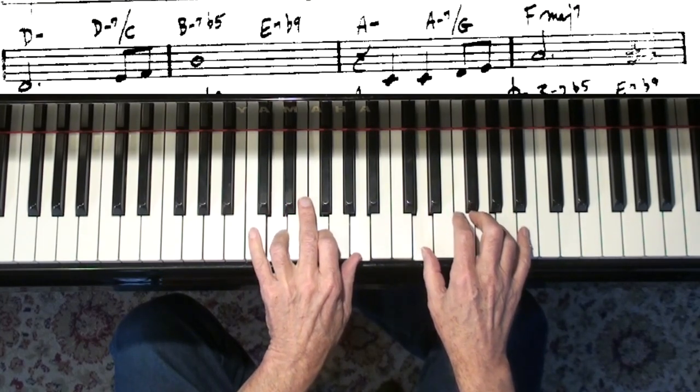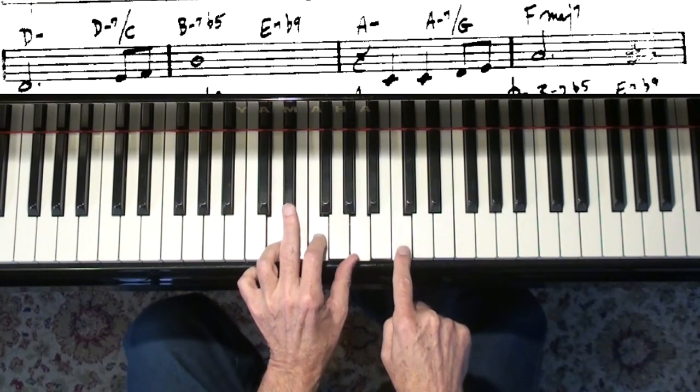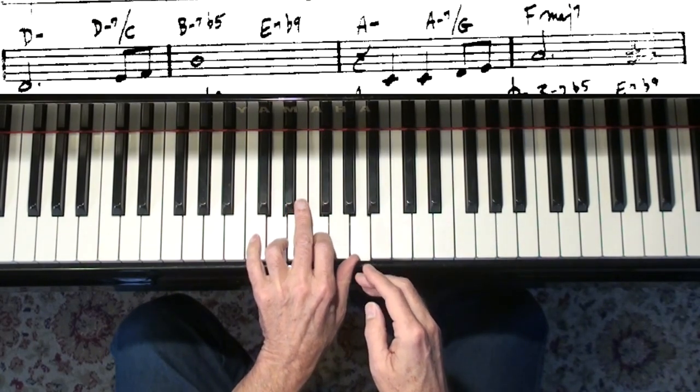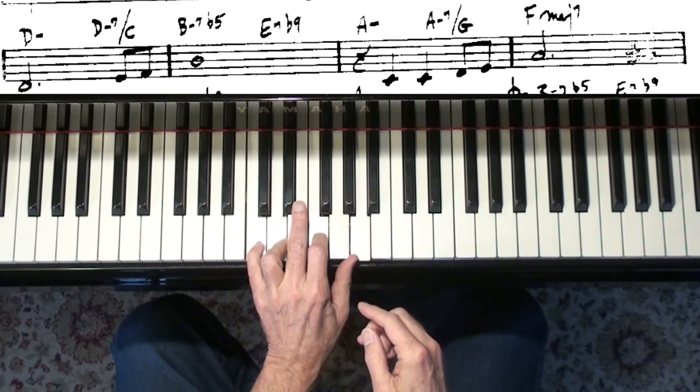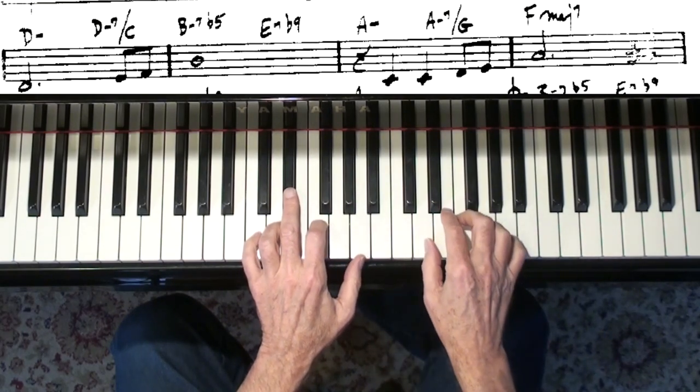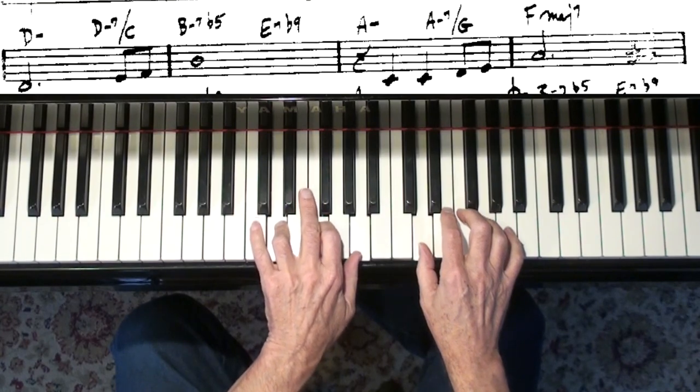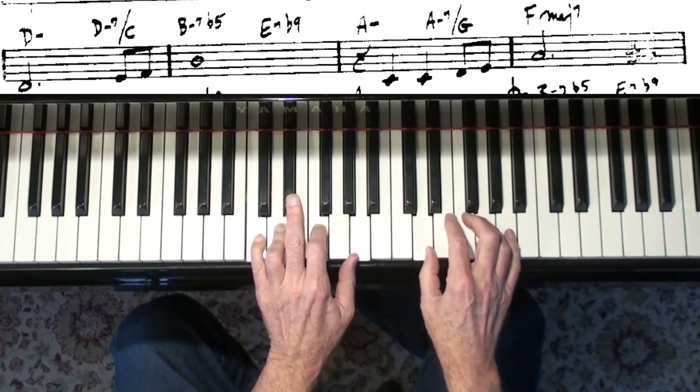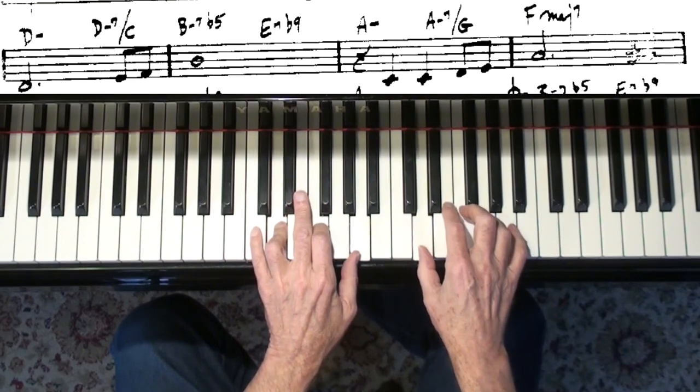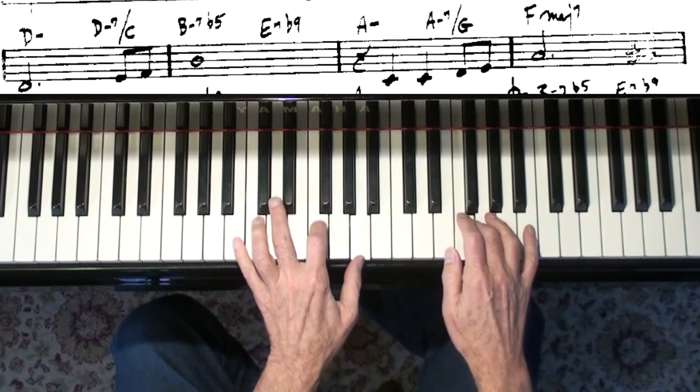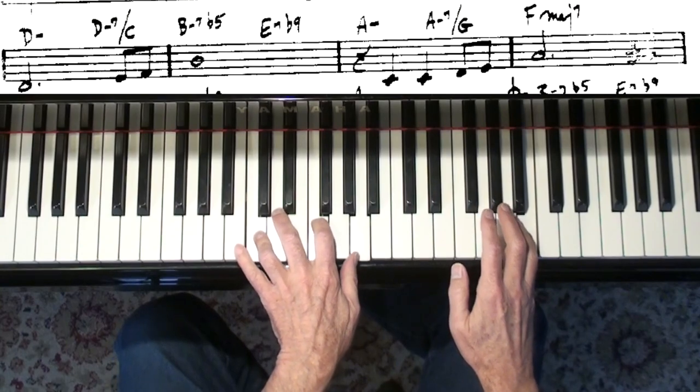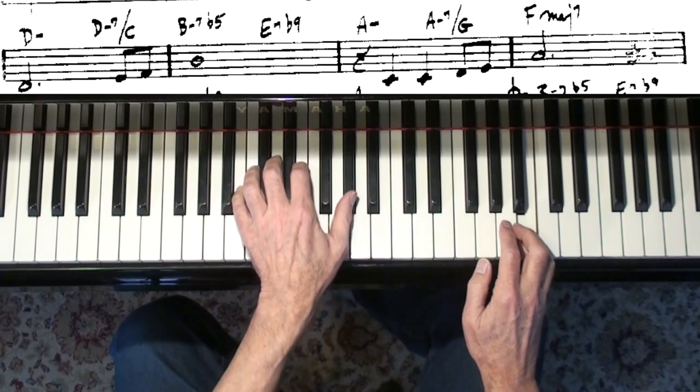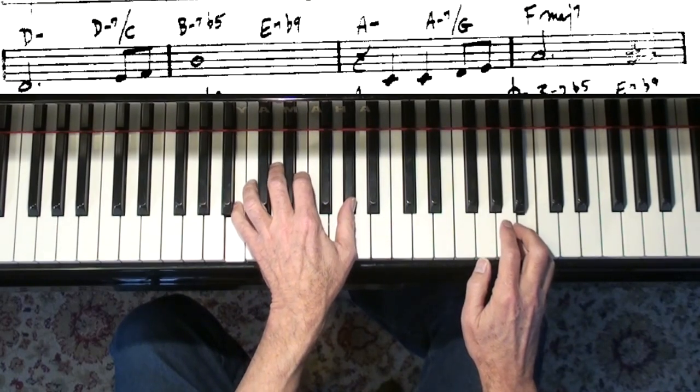The next chord, it says D minor 7th. That would be adding a C on there. But it says, the slash tells you that the bass note should be a C. So we're going to add the C down below. And really, if I hold the chord, I could just add the C, and it would sound pretty nice. And then see, if I go down one more note, hey, I've got the B minor 7 flat 5 chord. And then I'll do the E7, that inversion.